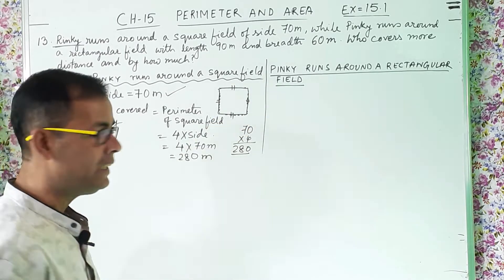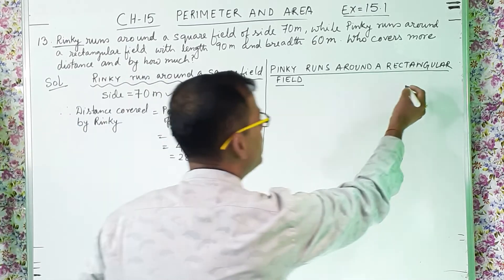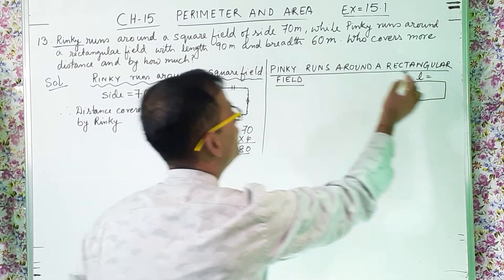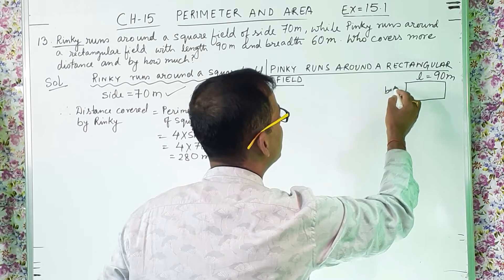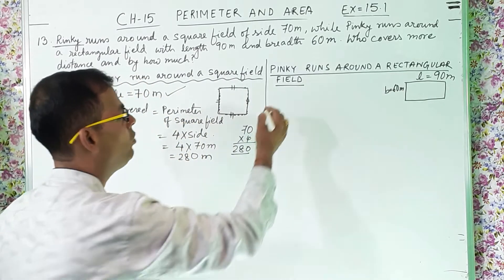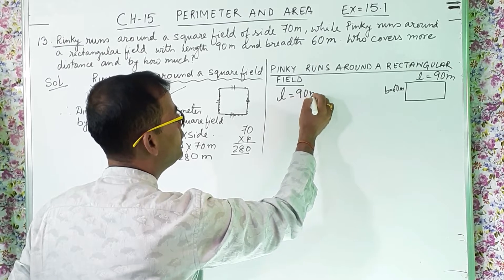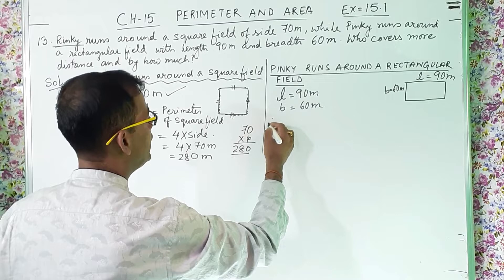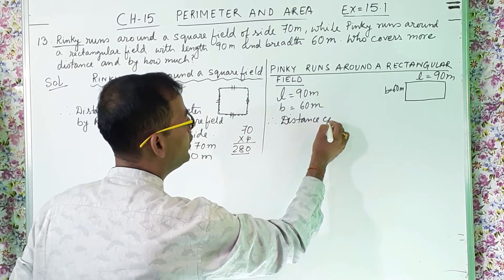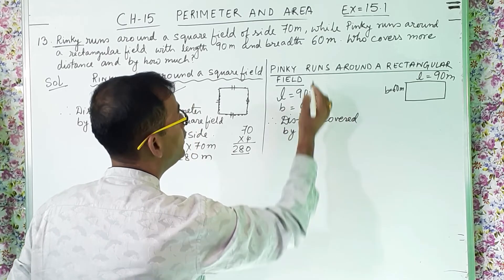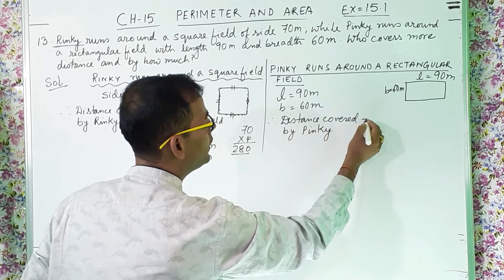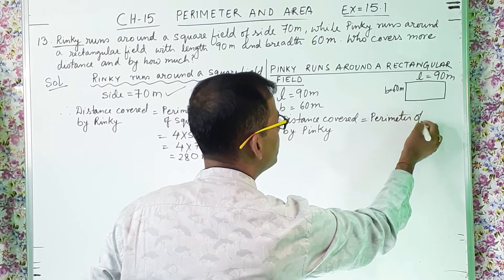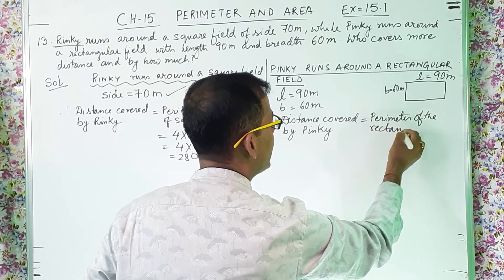Now we will talk about Pinky. Pinky is running around a rectangular field. Let us draw one rectangle. Length is told 90 meter and breadth is 60 meter. So length is equal to 90 meter, breadth equal to 60 meter. We will find out the perimeter. The distance covered by Pinky will be the perimeter of the rectangular field.